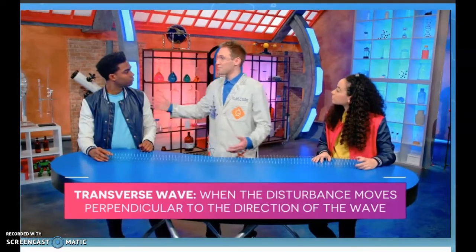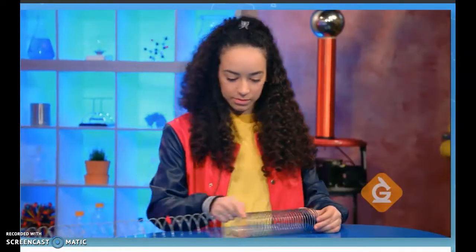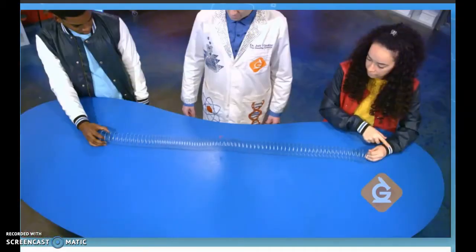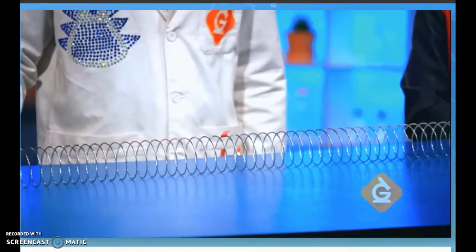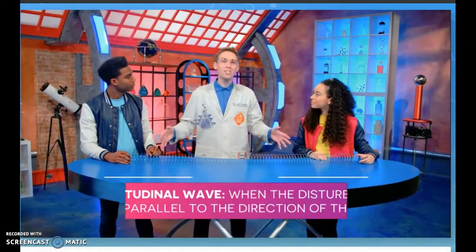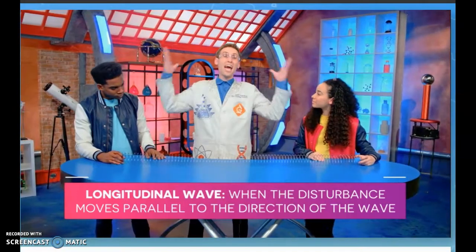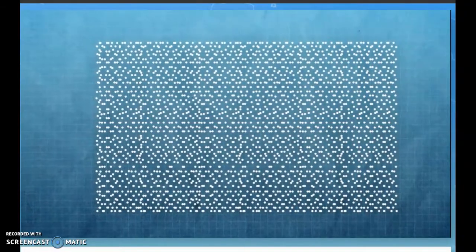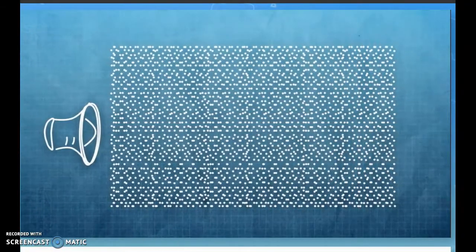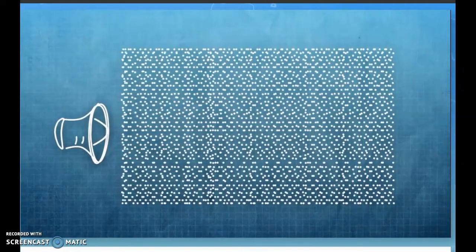But sound waves travel a little differently. Instead of moving up and down, the waves are moving forward and backwards. That's exactly right, Izzy — this is called a longitudinal wave, and it's the way that sound waves travel through the air. Air is made up of particles, and these particles are important to how sound waves travel. When a speaker vibrates, it causes air particles to vibrate in the form of a longitudinal wave.